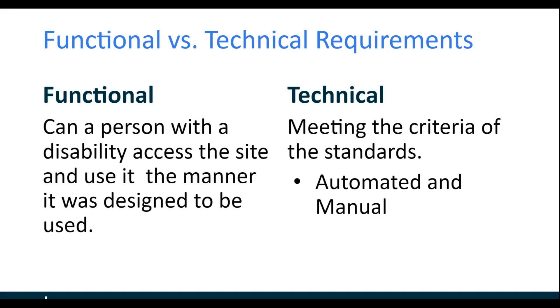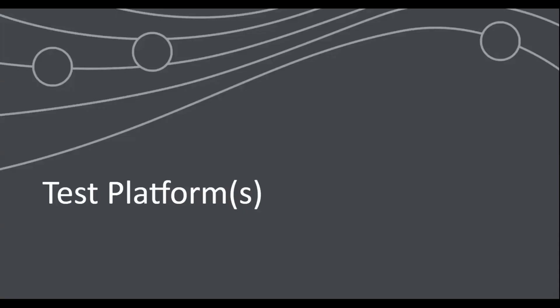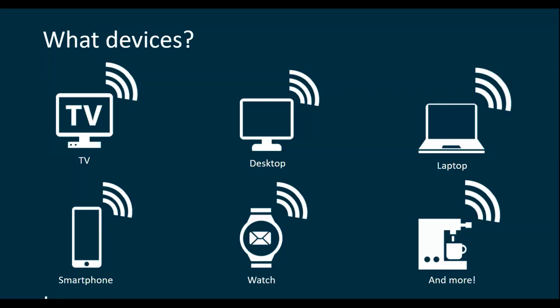The functional testing part asks: can a person with a disability access the site and use it in the manner it was designed to be used? On a transaction path or user flow, you can apply any assistive technology to perform tasks and gain insight about whether the application allows a person with a disability the same access to information as a non-disabled person. I'm happy to answer any questions on this in the Q&A session.